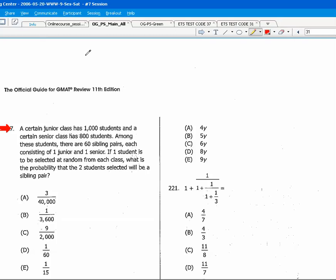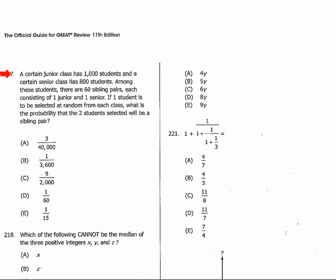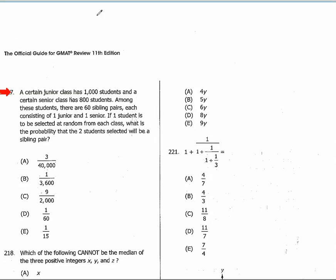When we select the junior, we've got 60 possible members of sibling pairs out of 1,000 students. Now we've got to multiply that by the probability of B, assuming that A has already occurred — assuming that we've already selected one of these people from a sibling pair.